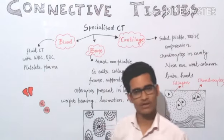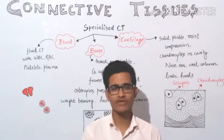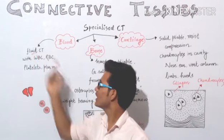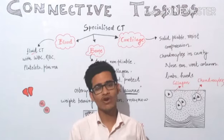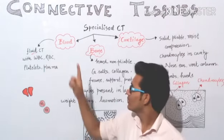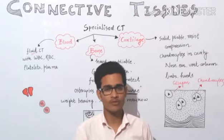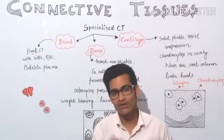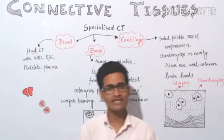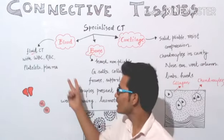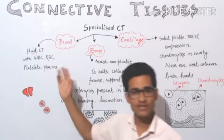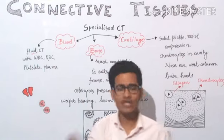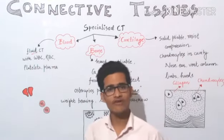First, we will talk about blood. We know very well that blood is fluid connective tissue — it is fluid in nature, it is a liquid. One most important point we already talked about in the last lecture is that blood does not contain any kind of fibers. Connective tissue cells produce modified polysaccharides (ground substance) and different kinds of fibers such as collagen and elastin, but these fibers are not present in blood. So this is an exception — blood is the only connective tissue that is devoid of fibers.